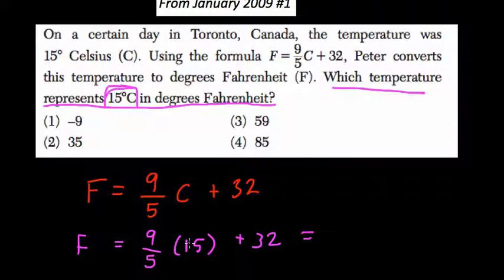you would then divide it by 5. So essentially you can think, I'm going to divide the product of 9 and 15, 9 times 15, by 5, and then add 32.